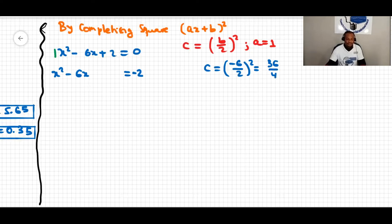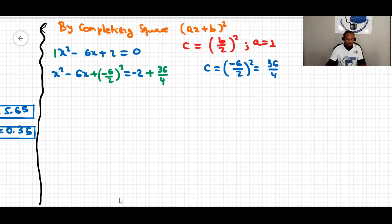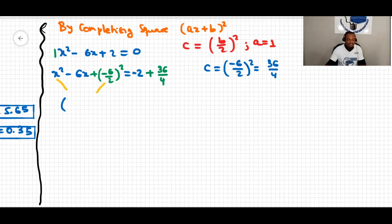We add that value to the left-hand side because it's the c value that makes the left side a perfect square. Since we added it on the left, we also add 36 over 4 on the right. We can then take the base — the basis of the first and last term — and write this as (x minus 6 over 2) squared equal to negative 2 plus 36 over 4, which simplifies.